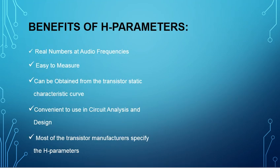Here we will go with the small signal low frequency analysis, using the H parameter model. In the small signal high frequency analysis we use the hybrid pi model. The benefits of H parameters: they give real numbers at audio frequency range, are very easy to measure, can be obtained from the transistor static characteristics curve, and are convenient to use in circuit analysis and design. Most transistor manufacturers specify the H parameter values.